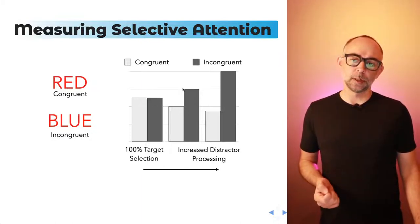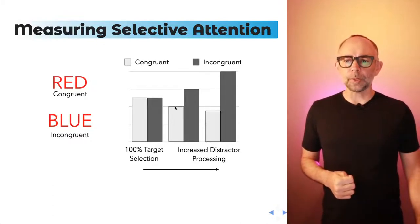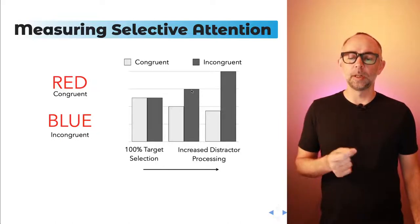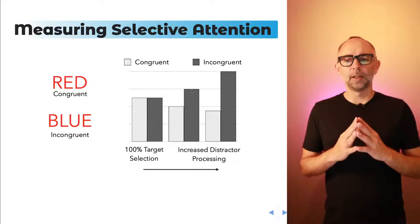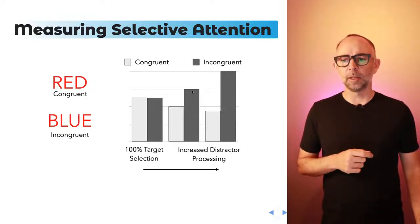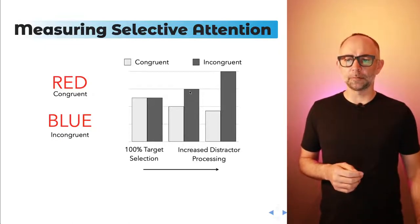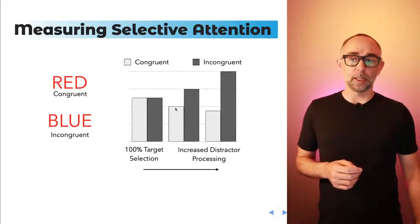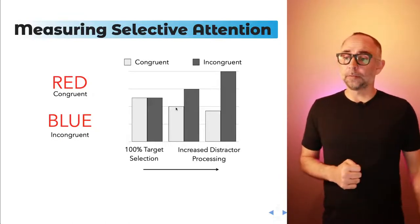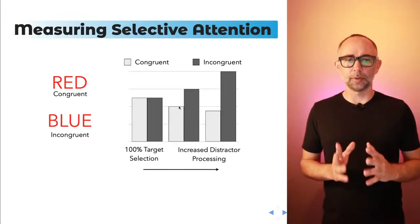This middle bar shows what probably happens to most people. It's a little bit easier to name the color of congruent stimuli, and a little bit harder or slower to name the color of the incongruent stimulus. That suggests you weren't totally able to ignore the word information, because it makes you a little bit faster when the word matches and a little bit slower when it mismatches. This difference is referred to as the Stroop effect — the effect of the congruency manipulation on color naming reaction time.